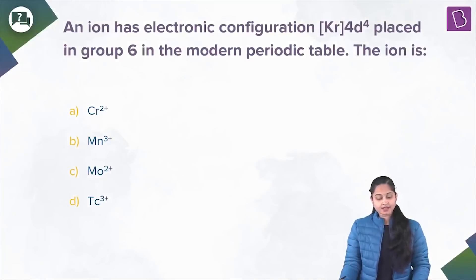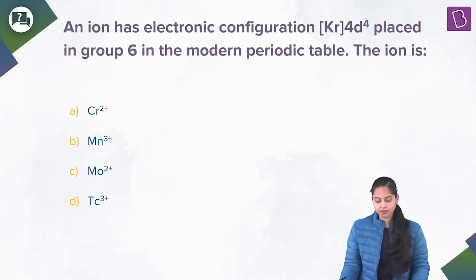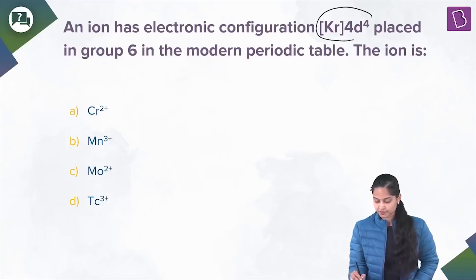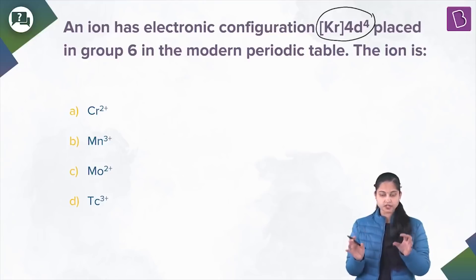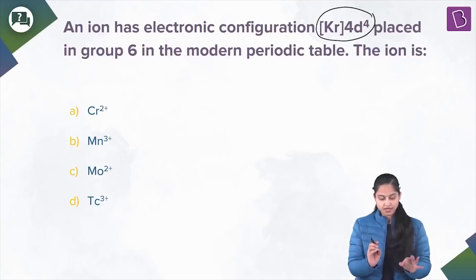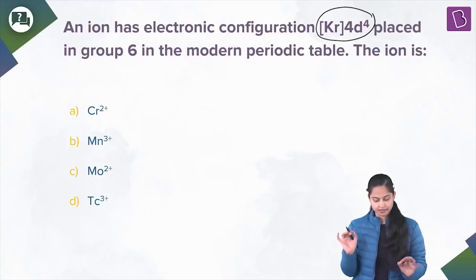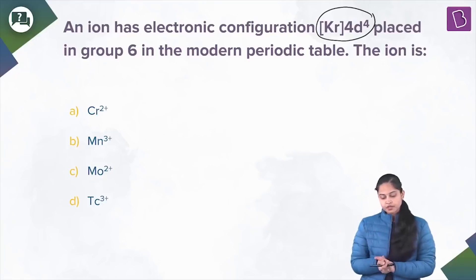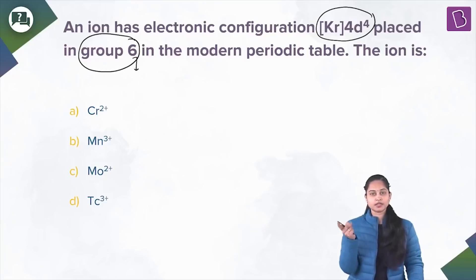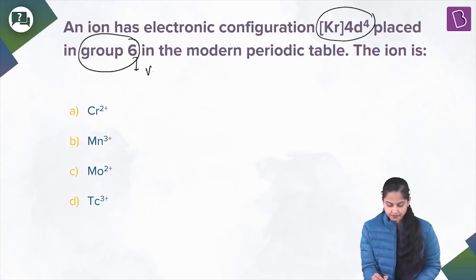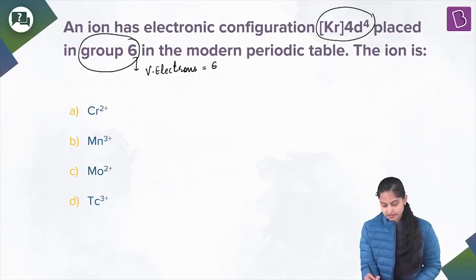The next question: an iron has electronic configuration [Kr] 4d⁴ and is placed in group 6 of the modern periodic table. Since the metal belongs to group 6, it means the valence electrons in its ground state should be 6.